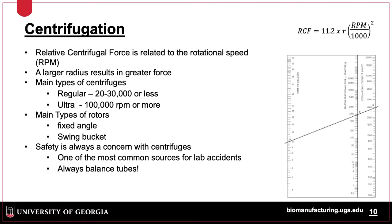Centrifuges are grouped into two main types. Regular centrifuges, also called floor centrifuges, have a maximum rotational speed of about 30,000 rpm or less, while ultracentrifuges are 30,000 rpm or more, sometimes over 100,000 rpm.